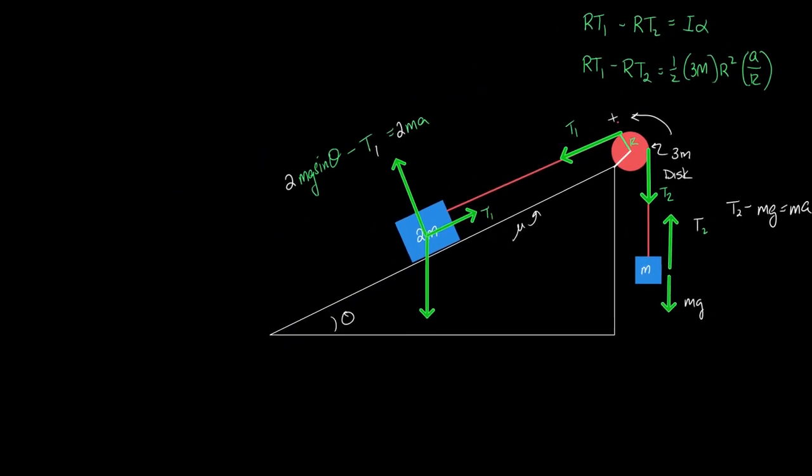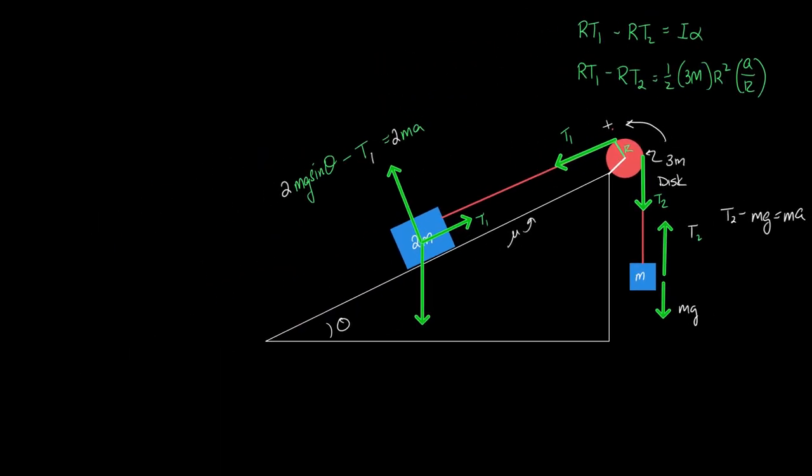That allows me to clean this up. And when I clean it up, I get a torque equation that looks like T1 minus T2 equals three-halves MA and 2MG sine theta minus T1 equals 2MA and T2 minus MG equals MA.